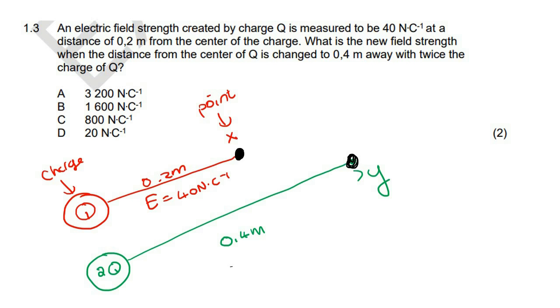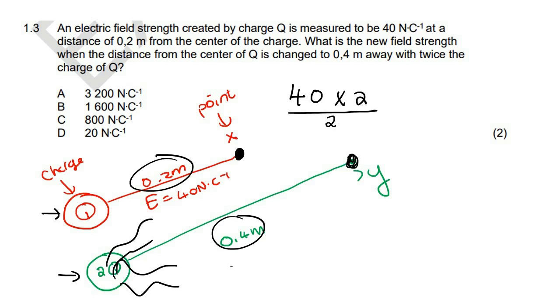Okay, so we know that the original electric field over here was 40. Then if you go from Q to 2Q, then what does that do to the strength of the electric field? Well, that would make it double as strong. So we're going to say 40 multiplied by 2. But then we've made the distance double. Can you see we've doubled the distance from 0.2 to 0.4?